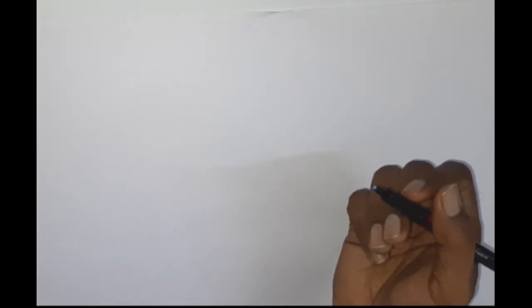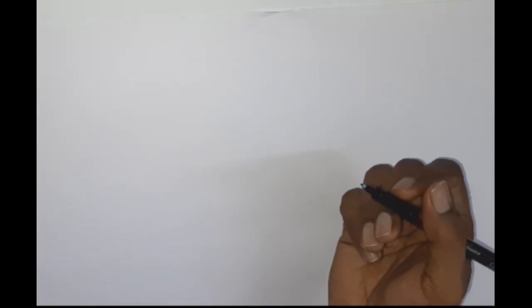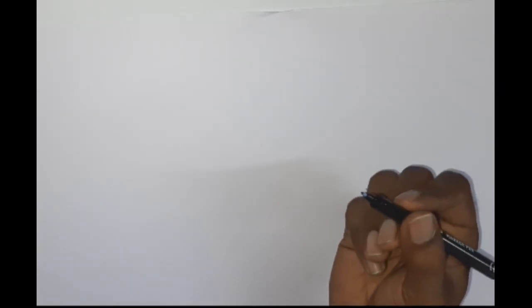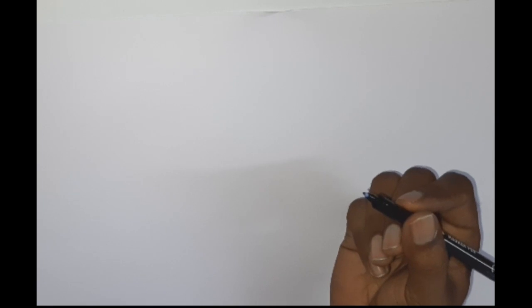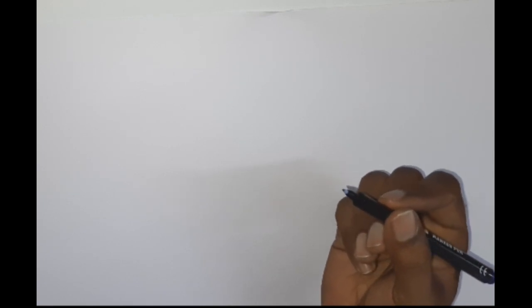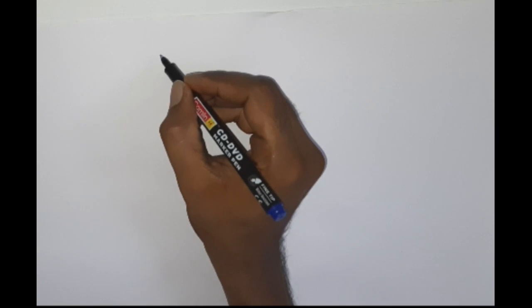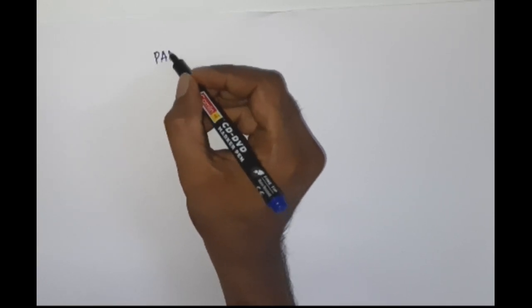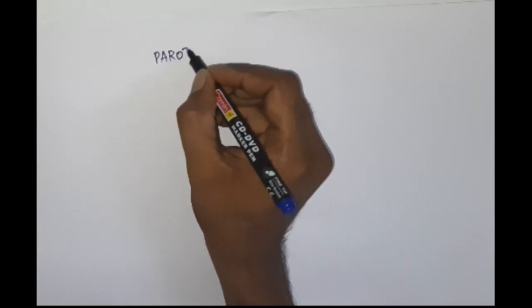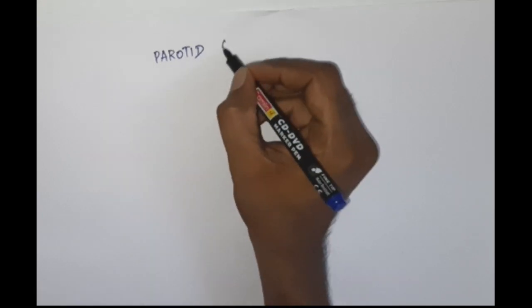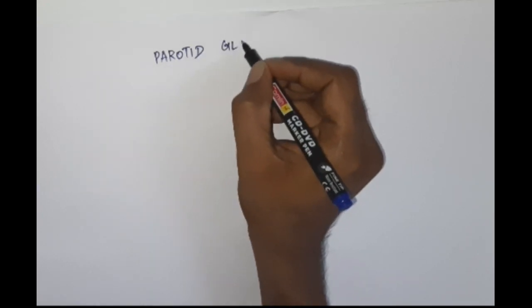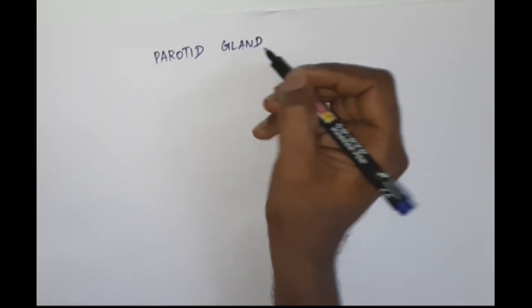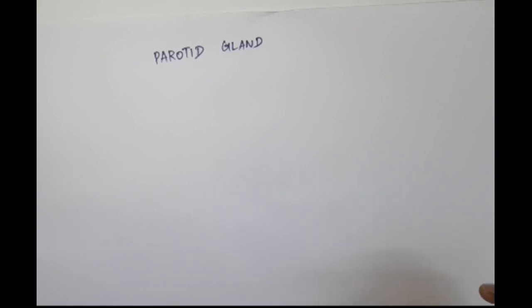Hi everyone. Today we are going to see about the parotid gland and the structures present inside. The parotid gland is a pyramidal-shaped gland, the largest of the salivary glands, which is located in very close proximity with the external acoustic meatus.